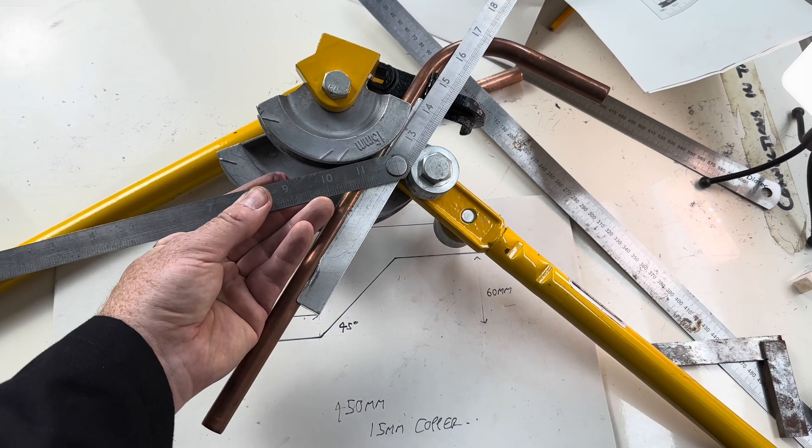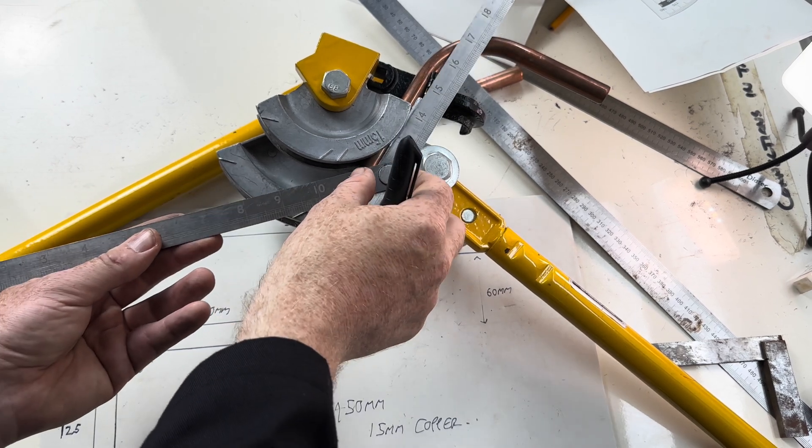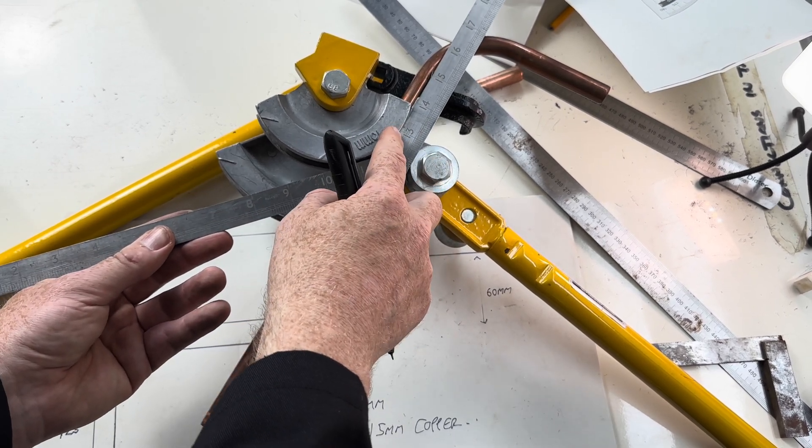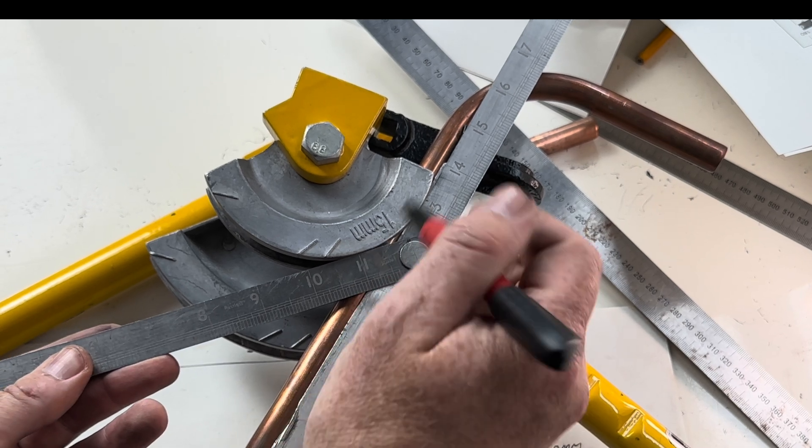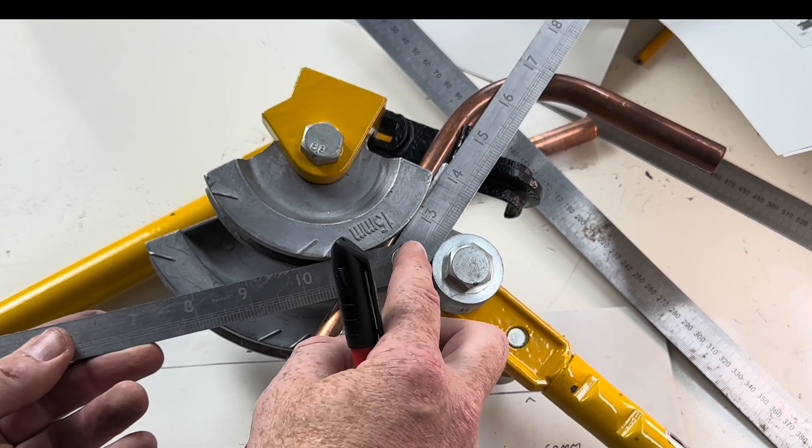We then place the folding ruler so it touches the former on both sides there and there. And it's also got to be parallel with the pipe.